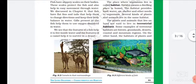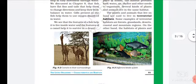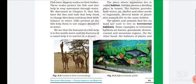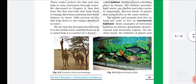The plants and animals that live on land are in terrestrial habitats. Some examples of terrestrial habitats are forests, grasslands, deserts, coastal regions, and mountain regions.